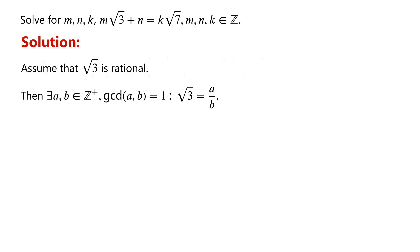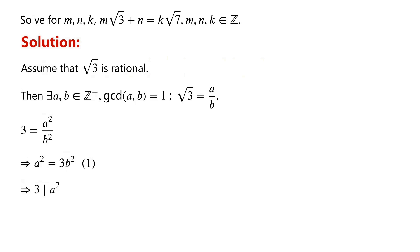Squaring both sides of the equation, we have 3 = a²/b². Rearranging the equation, we have a² = 3b². This implies that 3 divides a².